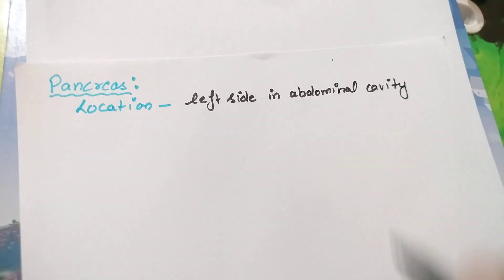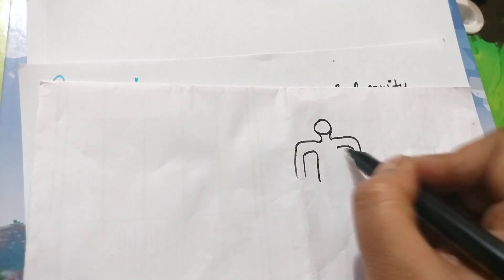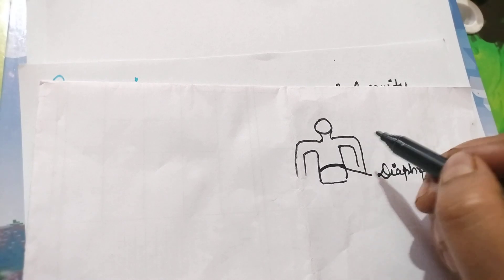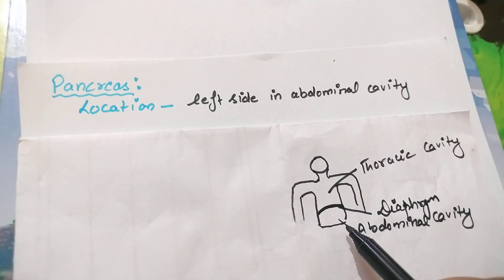Now, what is this abdominal cavity? If we draw a rough diagram of the human body, there is a muscle named as diaphragm. This muscle divides the body into two regions. The region above this muscular organ is known as the thoracic cavity, and the area below this diaphragm is known as the abdominal cavity. So pancreas is located in the abdominal cavity, meaning it is present below the diaphragm.